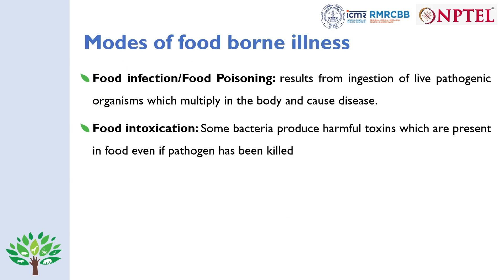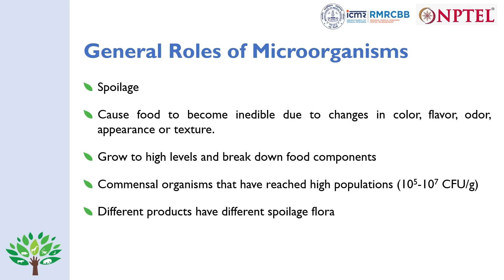Modes of foodborne illnesses include food infection, resulting from ingestion of live pathogenic organisms that multiply once they enter the body, and food intoxication, where some bacteria produce harmful toxins present in food even if the pathogens are killed. Microorganisms involved in spoilage cause food to become inedible due to changes in color, flavor, odor, appearance, or texture. Common spoilage occurs when cell populations reach around 10^5 to 10^7 colony forming units per gram, with different products having different spoilage flora.